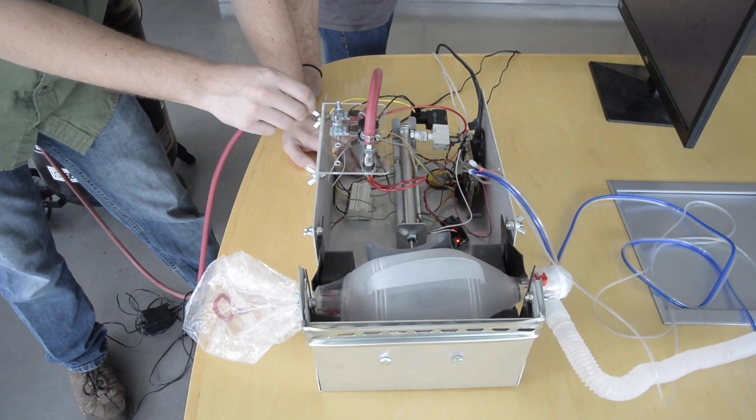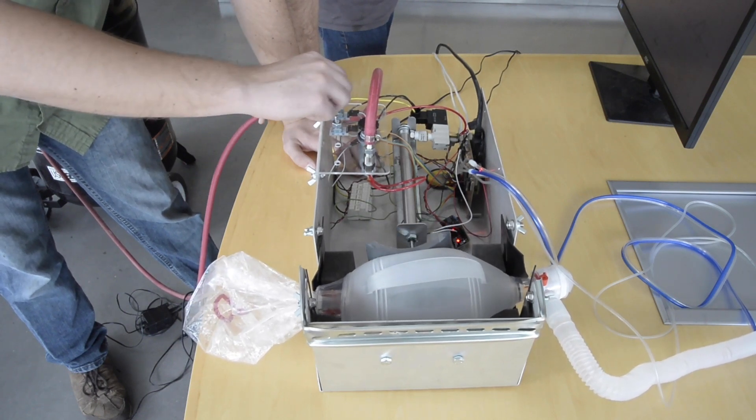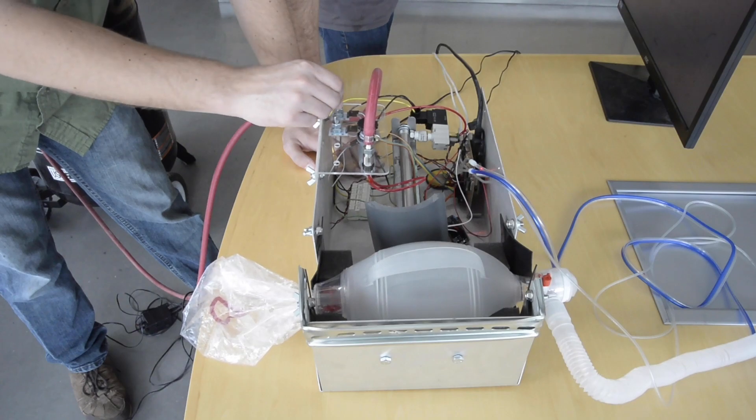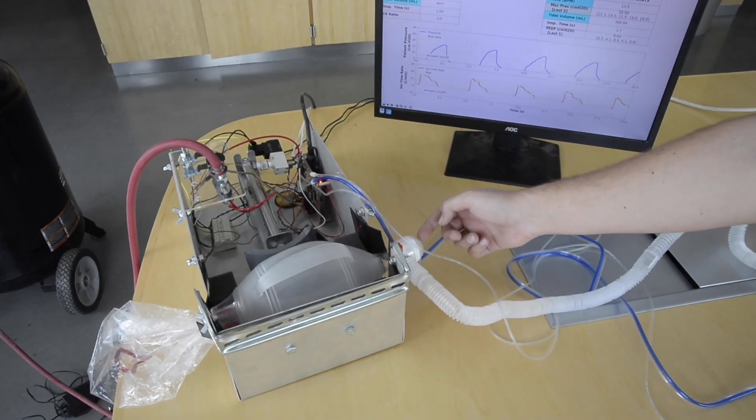Respiratory settings such as inspiration time and respiratory rate can be adjusted using the encoder knobs. The ambu bag comes with a safety pressure relief valve to protect the patient.